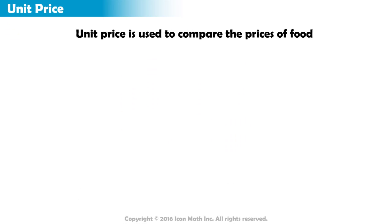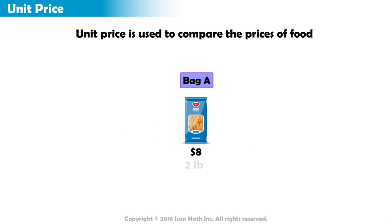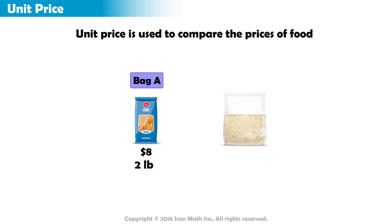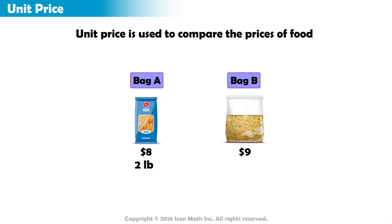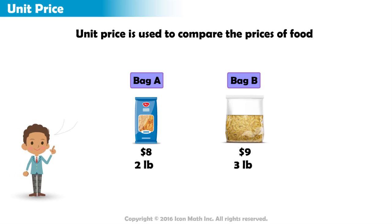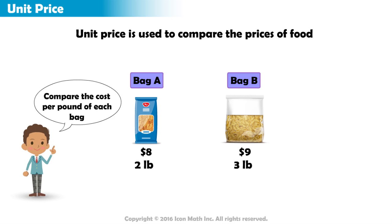For example, Bag A of macaroni costs $8 and weighs 2 pounds. Bag B of macaroni costs $9 and weighs 3 pounds. Bag A costs less, but it also weighs less. To determine which is a better deal, we must compare the unit price or cost per pound of each bag.